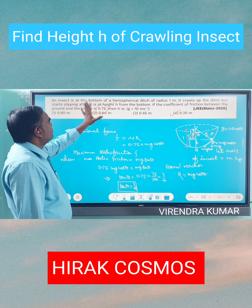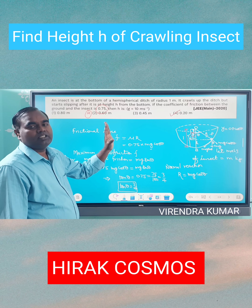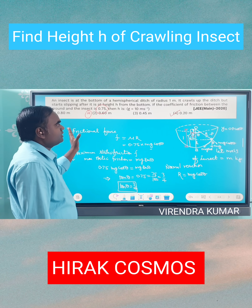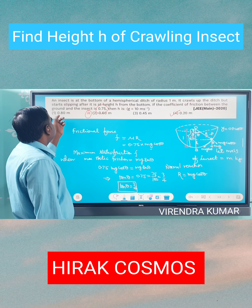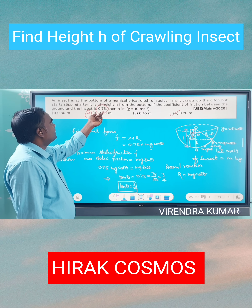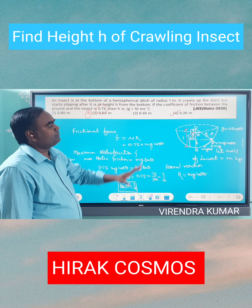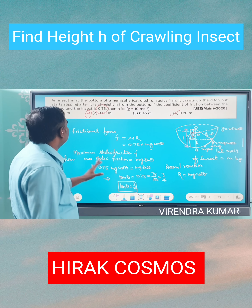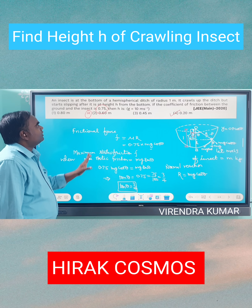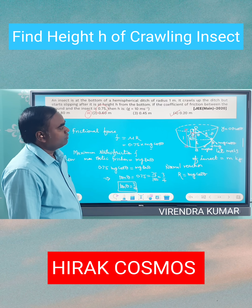An insect is at the bottom of a hemispherical ditch of radius 1 meter. It crawls up the ditch but starts slipping after reaching a certain height from the bottom. The coefficient of friction between the ground and the insect is 0.75. Find the height at which it starts slipping.